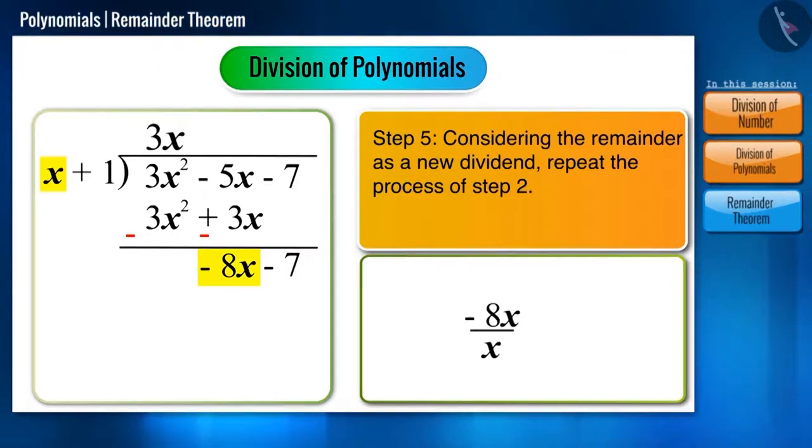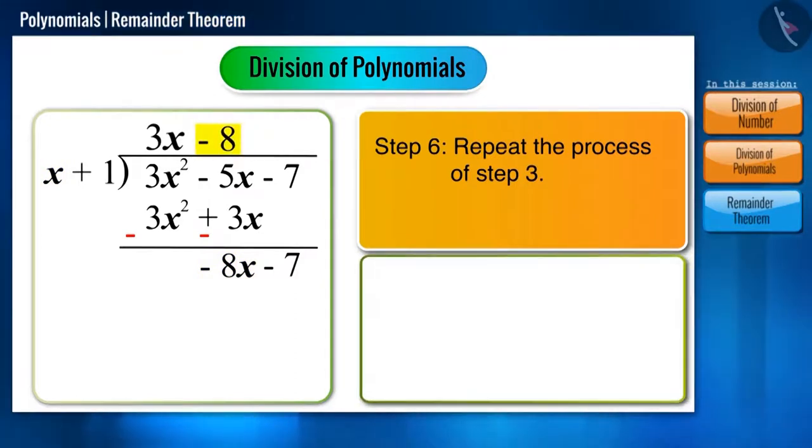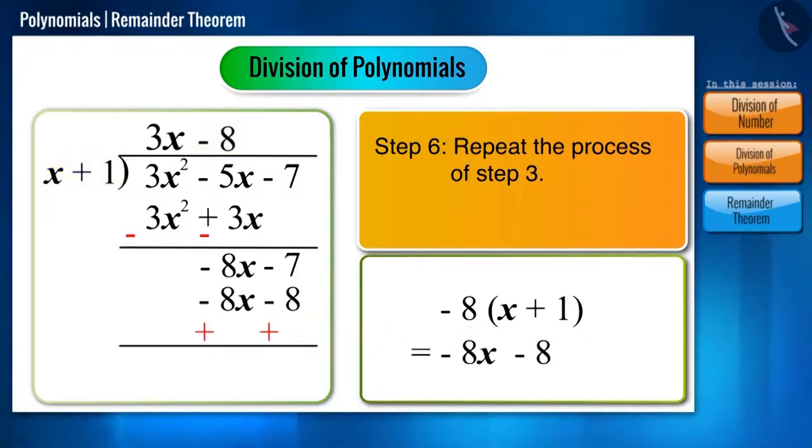The number that we get is minus 8. Let's write minus 8 in the quotient place, and if we multiply with all the terms of the divisor, we get minus 8x minus 8. When we subtract it, we are left with remainder 1.